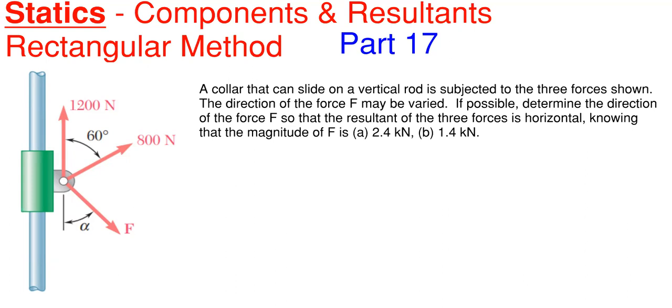So we have this picture on the left and the description states that a collar can slide on the vertical rod that is subjected to three forces as shown. The direction of the force F may be varied. If possible, determine the direction of force F so that the resultant of the three forces is horizontal, knowing that the magnitude of F is for part A 2.4 kilonewtons and then for part B 1.4 kilonewtons.